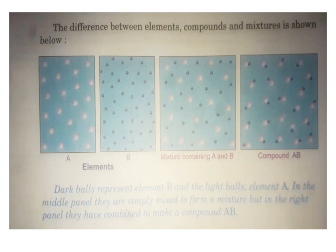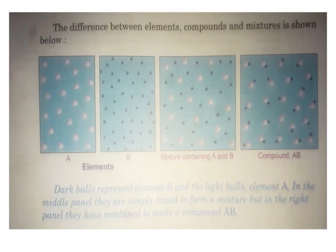A diagram illustrates the difference between elements, compounds, and mixtures. Element A has all the same type of atoms; element B has all the same type of atoms. In a heterogeneous mixture of A and B, the white and black balls are in different numbers - not in a fixed proportion. But in compound AB, for every white ball there is one black ball - the proportion is always fixed. Mixtures have no fixed proportion; compounds always do.